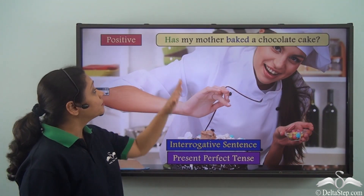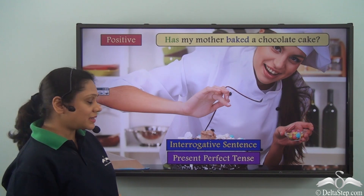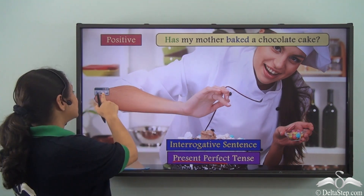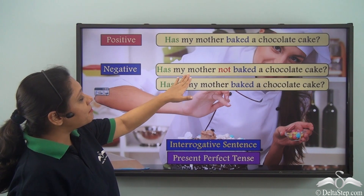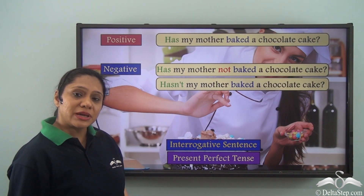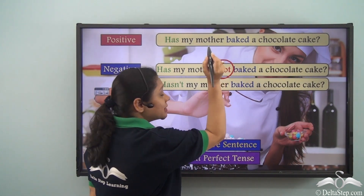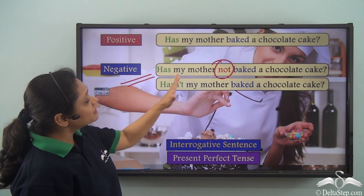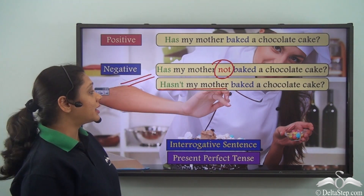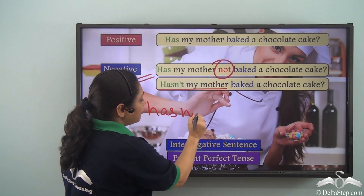Now let us read the sentence: Has my mother baked a chocolate cake? This is a positive interrogative sentence portraying the present perfect tense. If I write: Has my mother not baked a chocolate cake? - this is a negative interrogative sentence, because we have included the negative word 'not'. So 'Has my mother not baked a chocolate cake?' or 'Hasn't my mother baked a chocolate cake?' mean the same thing - in the second case we have used the contracted form of 'has not'.